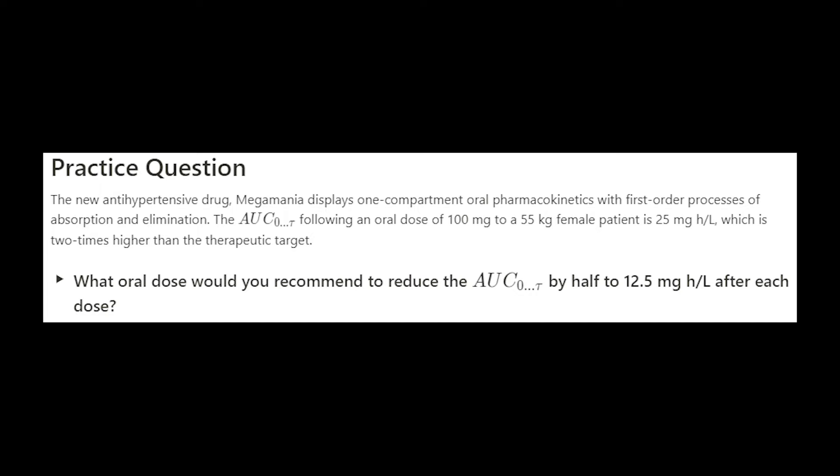The AUC following an oral dose of 100 mg to a 55 kg female patient is 25 mg hour per liter, which is two times higher than the therapeutic target. So what oral dose would you recommend to reduce the AUC by half to 12.5 mg hour per liter after each dose?